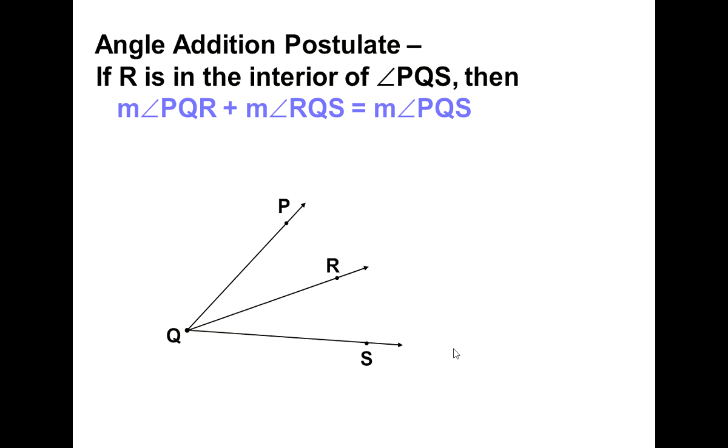The angle addition postulate. If R is in the interior of angle PQS, that means that R is inside. Then notice how Q is the middle letter of all three of these angles. PQR, that's one small angle, and RQS, that's another small angle. So the two measures of the small angles are equal when added together to the measure of the large angle, the whole angle. So this is a part, this is another part, and PQS is the whole.